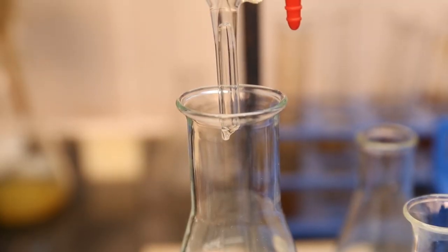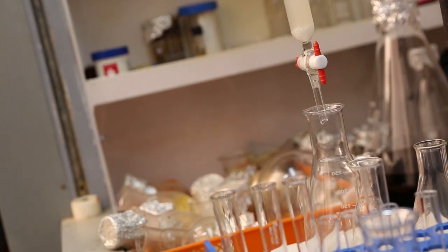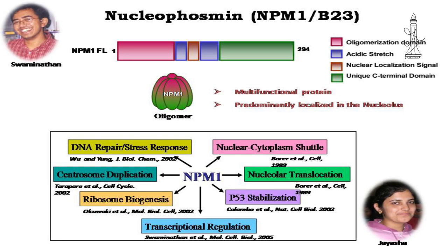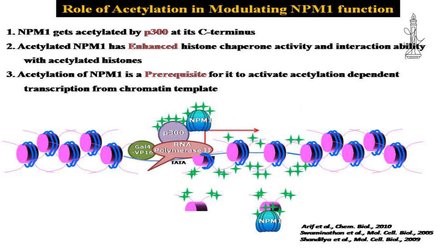In another project, the lab started to understand what we call genome dynamics — how genes are folded and unfolded by chaperone proteins, which controls gene expression. We find that genes which are expressing require a protein called NPM1, and chemical modification like acetylation is very important for that. Interestingly, NPM1 is a histone chaperone protein that regulates epigenetic enzymes like the acetyltransferase p300.